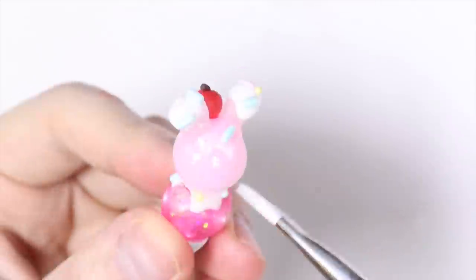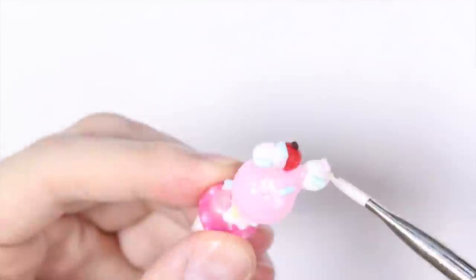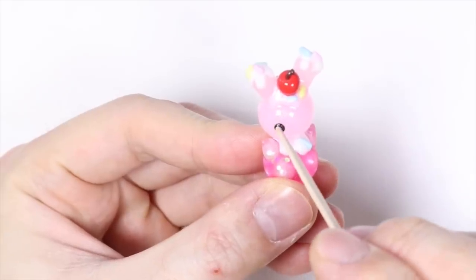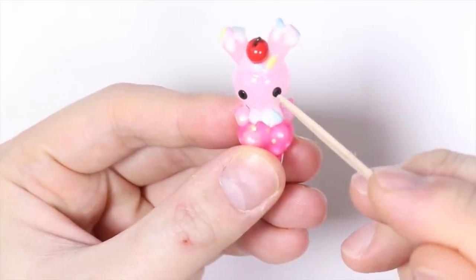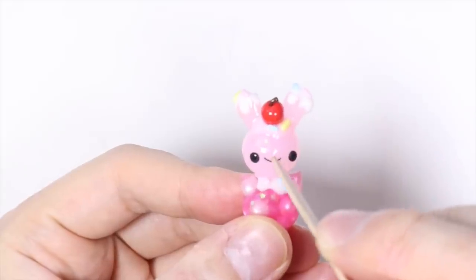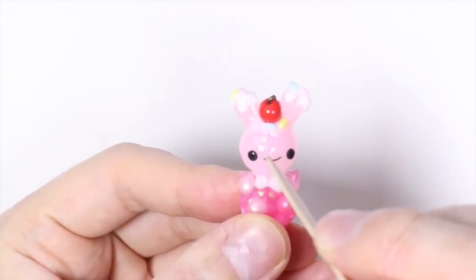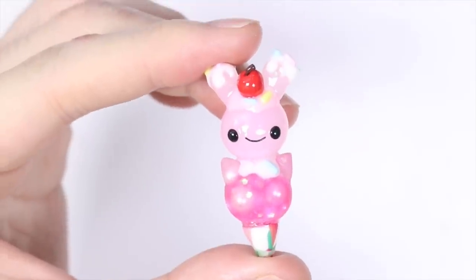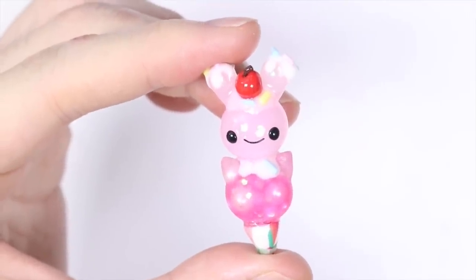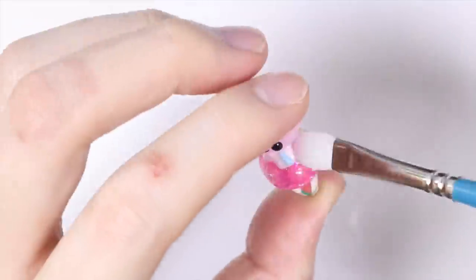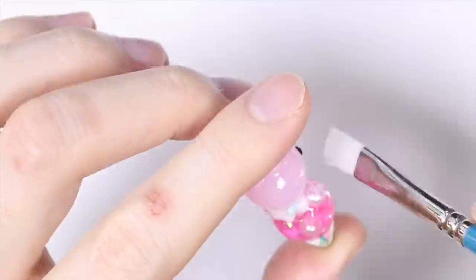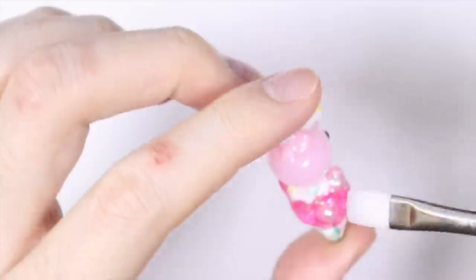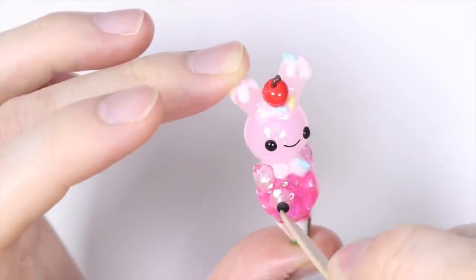And once that was cured I gave it a layer of UV resin to give it a nice glaze. And I gave it of course the signature dot eyes and a line smile. And let that cure under the UV lamp. Then I repeat the same steps with the cat head and of course I also had to give it the signature dot eyes and a line smile as well.